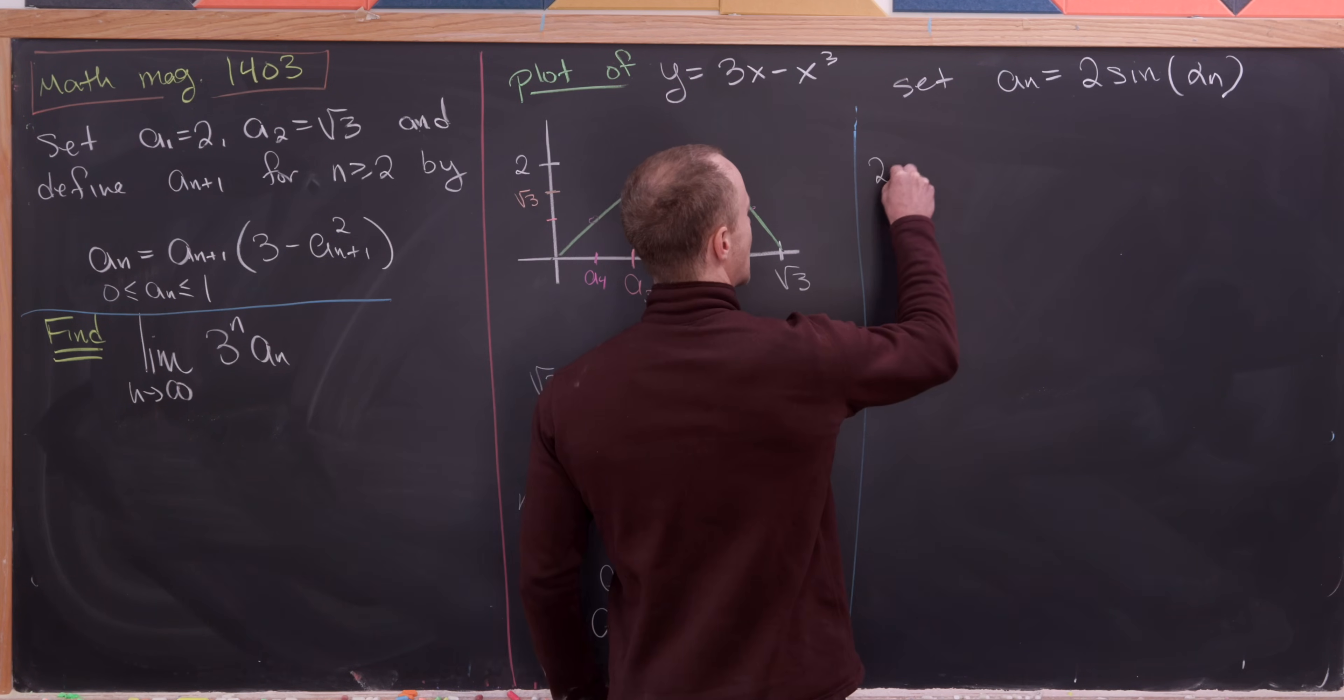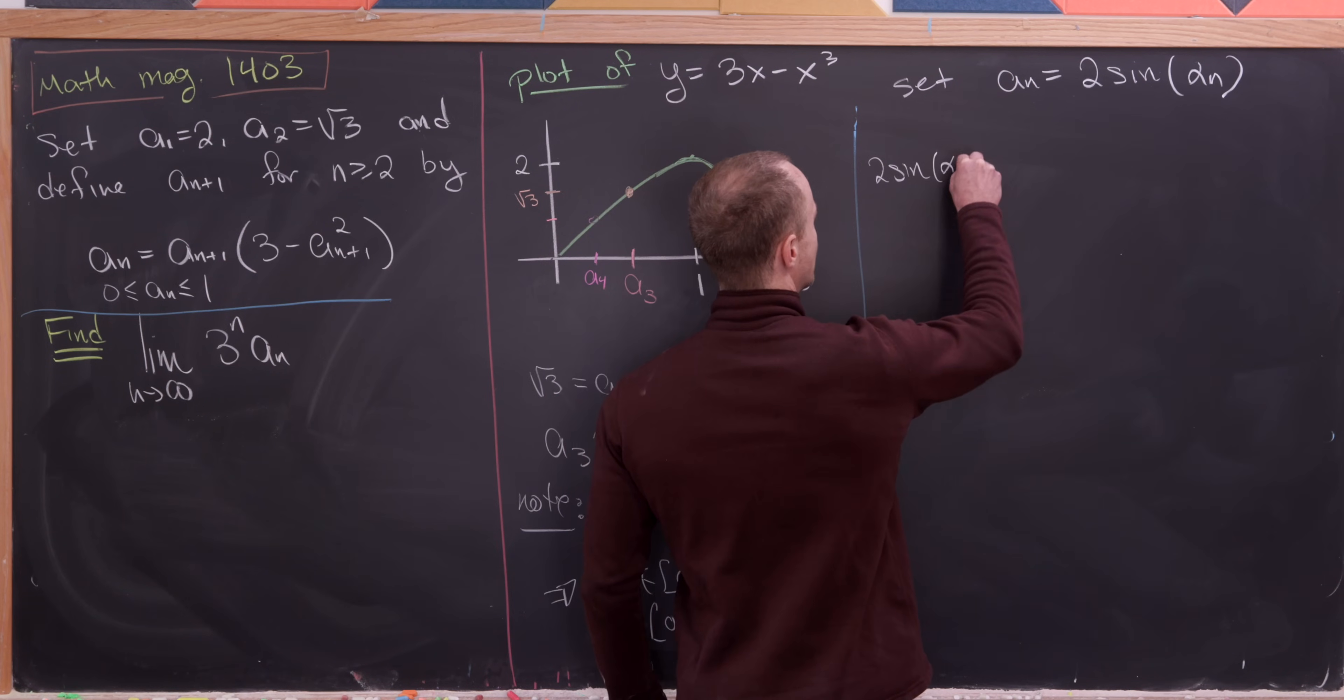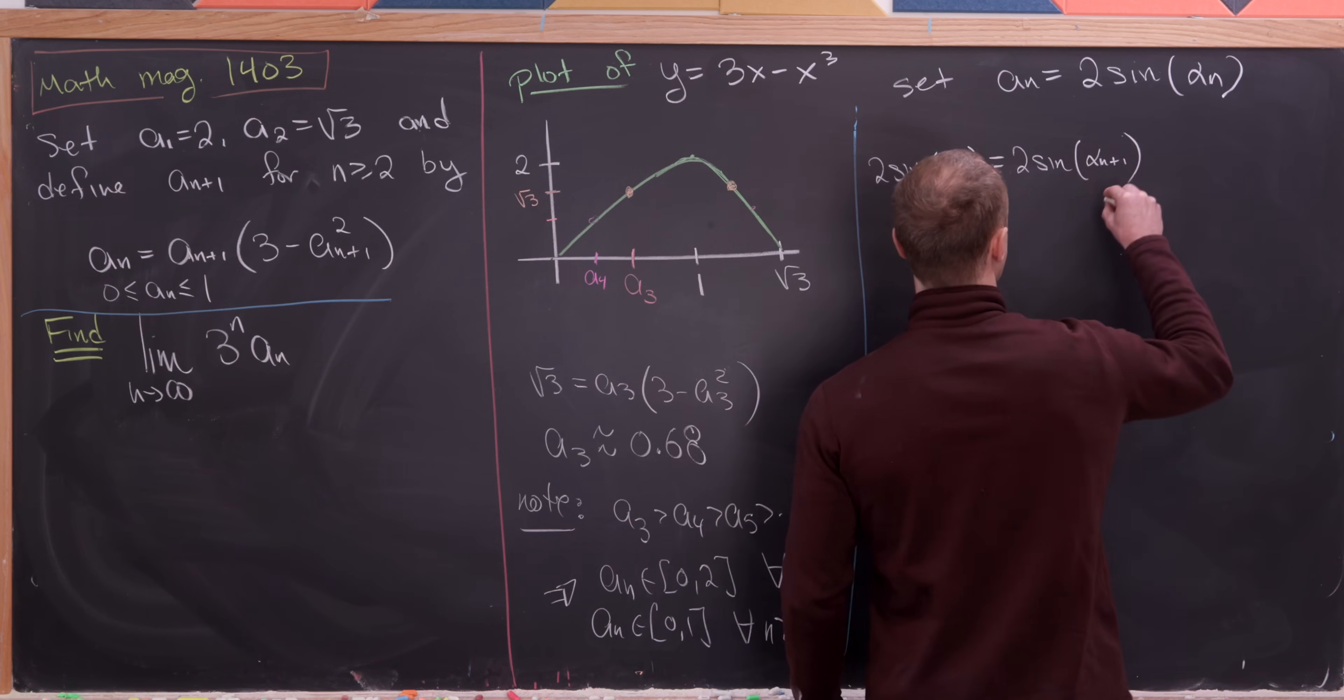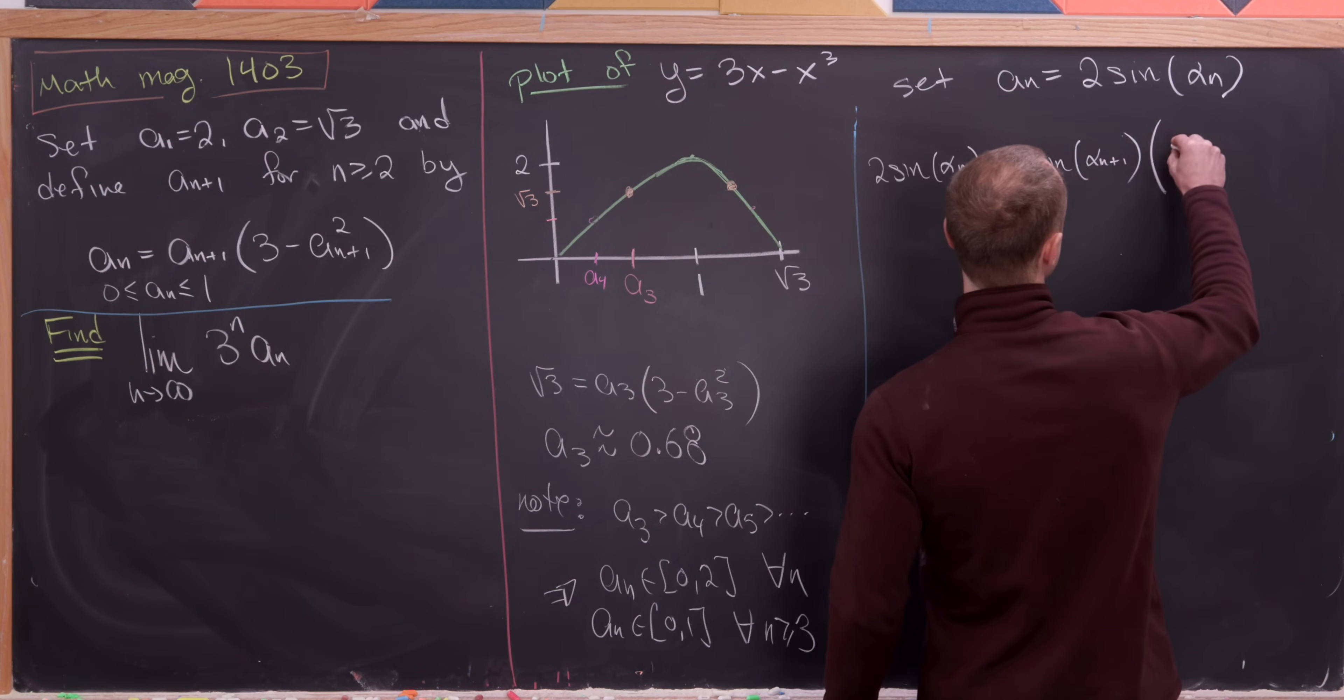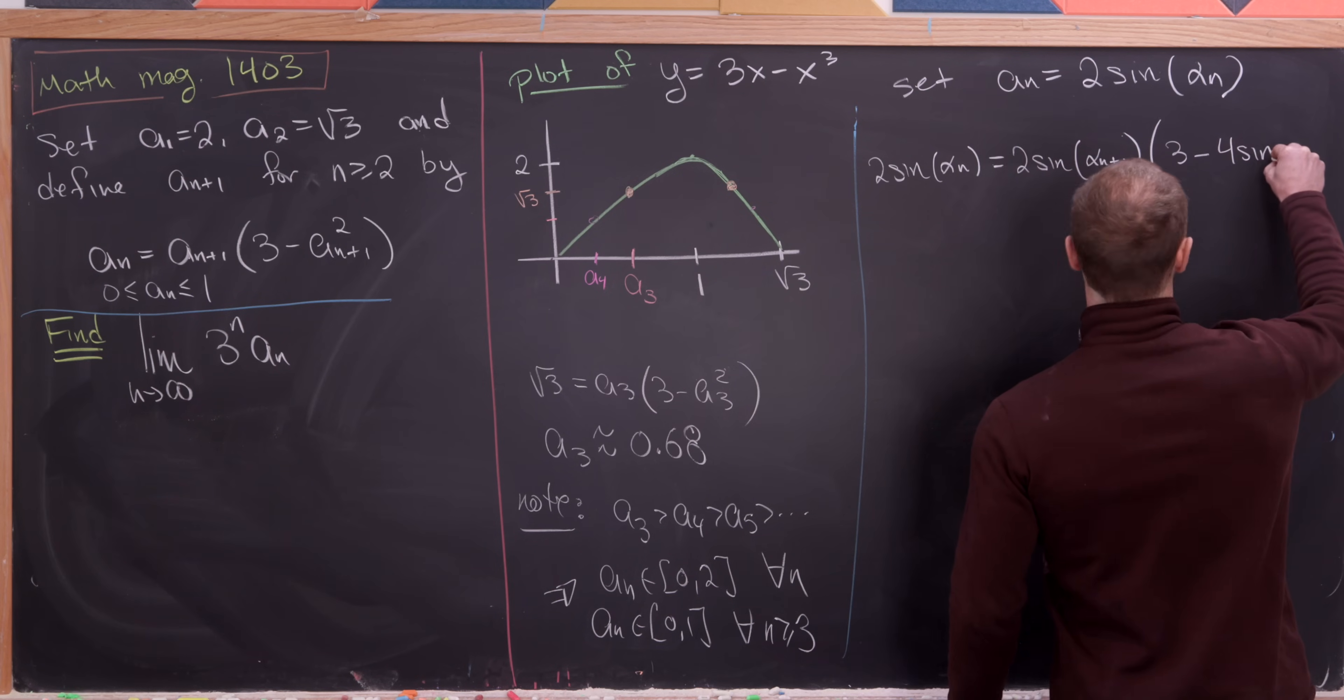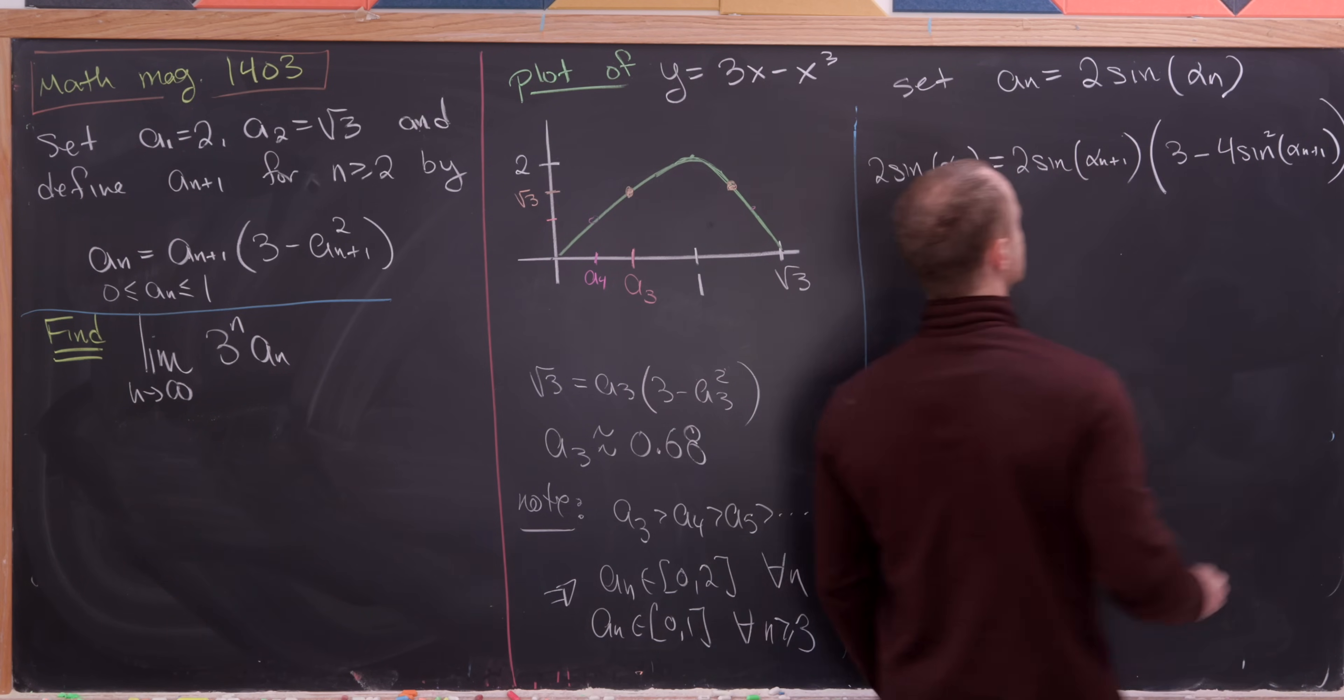So let's rewrite this original recursion using our a sub n equals 2 sine alpha n. So let's see, we'll have 2 sine alpha n equals, so it's going to be 2 times sine alpha n plus 1,